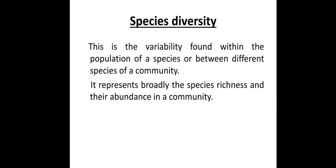The next type is species diversity. What is meant by species diversity? This is the variability found within the population of a species or between different species of a community. For example, plant community — there are different types of plants and different types of trees, all belonging to one community, that is the plant community, but they show variability within the species. So that is called species diversity.